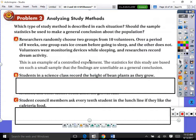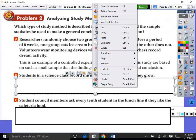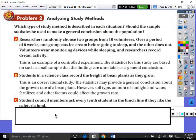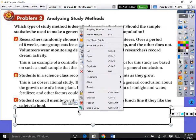Next one. Students in a science class record the height of bean plants as they grow. They didn't do anything, it's observational. So it says the statistics may provide a general conclusion about the growth rate of a bean plant. However, soil type, amount of sunlight and water, fertilizer, and other factors could affect the growth rate.